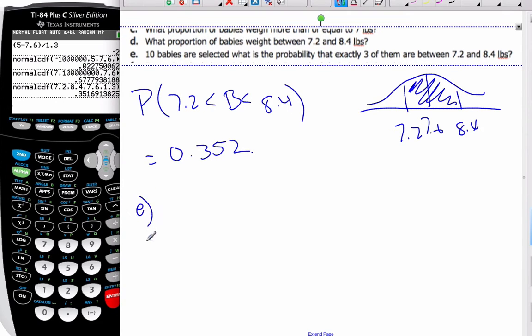Part E says 10 babies are selected. What's the probability that exactly 3 of them are between these 2 pounds? We've switched the question now. We're no longer doing normal. This is a binomial situation because it's either success or failure. They're either in this region or they're not. The probability for all the babies are the same, and there are exactly 10 trials. So I'm going to introduce a new random variable W for weights, belongs to binomial where N is 10, and my probability of success is 0.352.